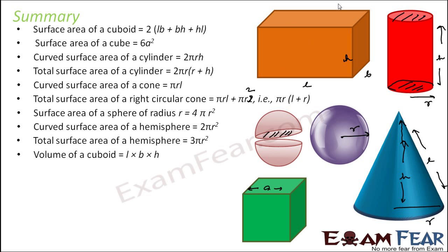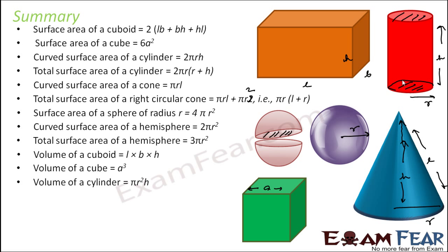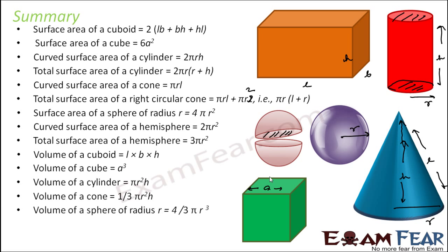The volume of a cuboid is length × breadth × height. The volume of a cube is a³. Volume of a cylinder is πr²h. Volume of a cone is 1/3 πr²h. Volume of a sphere is 4/3 πr³. Volume of a hemisphere is 2/3 πr³.